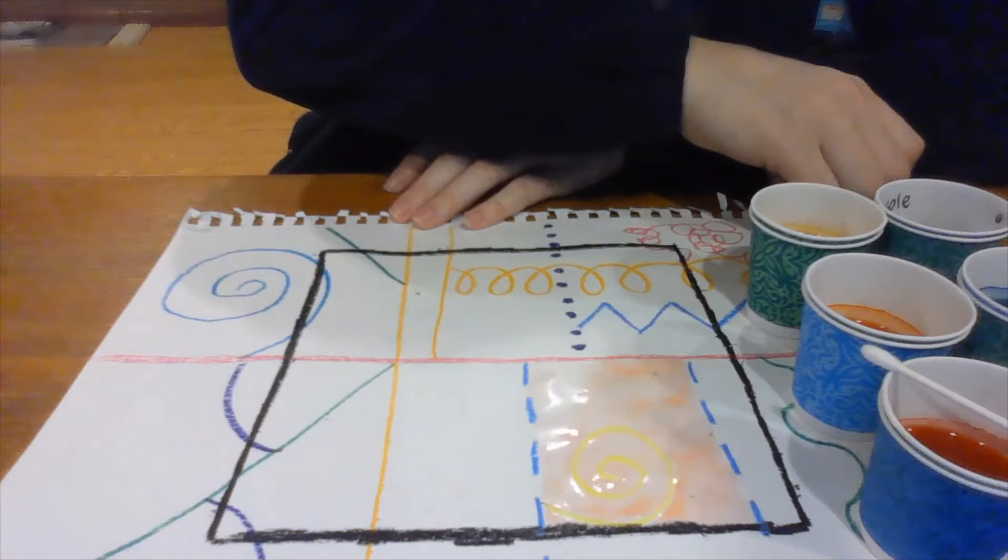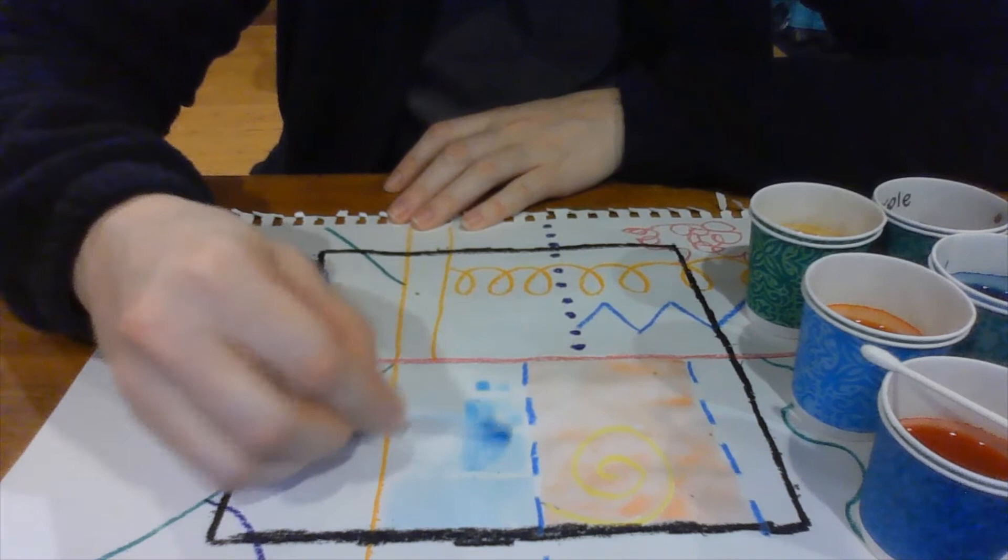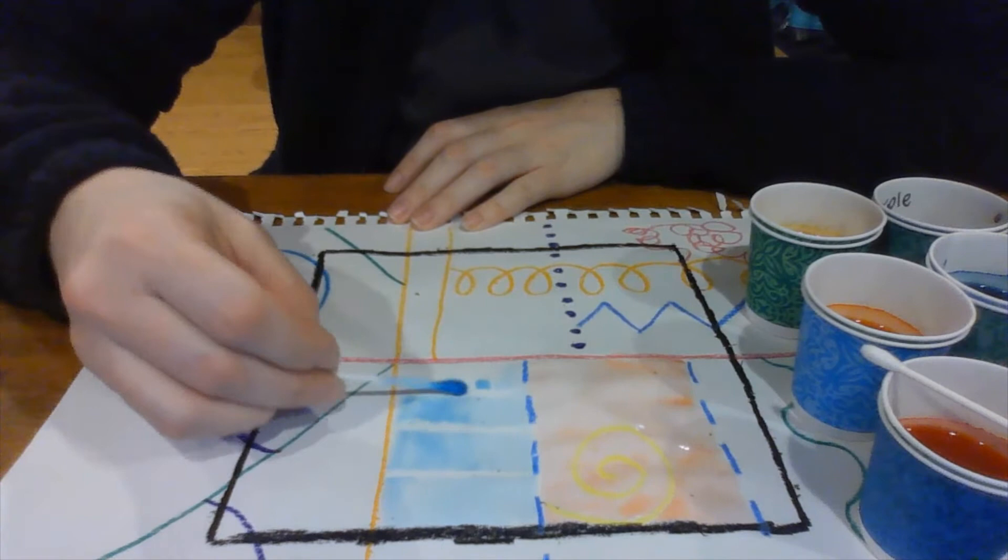Now here where I used the white crayon at, I can show you what that will do. Put some blue paint on top of it. Your crayon will act like a wall, and anywhere that crayon is will help the watercolor paint stay in that one section.